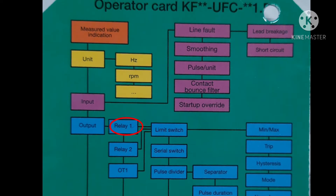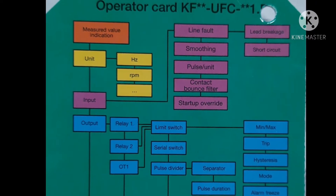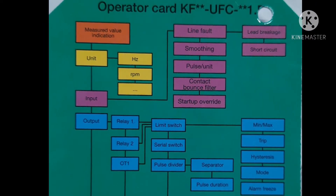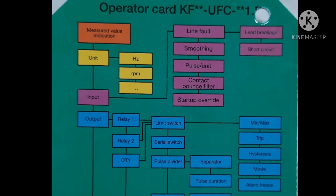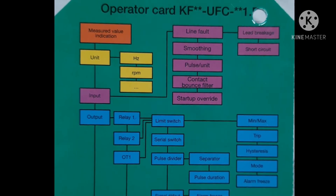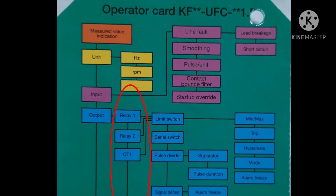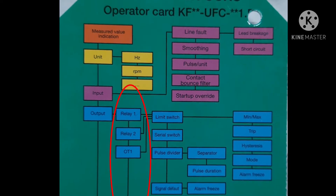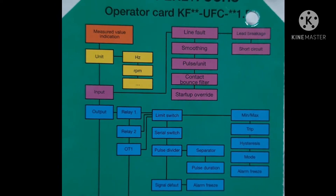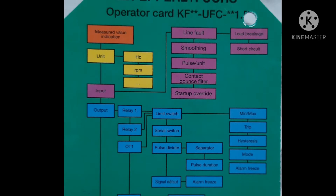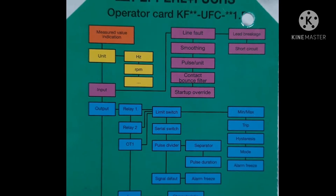Now your device will show 'relay 1'. Please keep the operating card handy as well. On the operating card you can see there are 4 output ports: relay 1, relay 2, OT 1, and I out. Select relay 1 and press OK, then select 'limit switch' and again press OK.